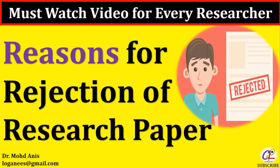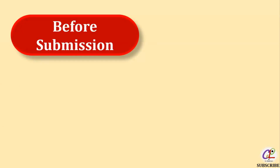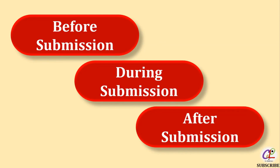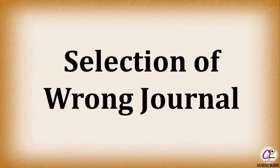I am going to discuss some of the important factors that you need to keep in mind during the process of publication of your research article. In my opinion, a researcher can make mistakes at three stages: before submission, during submission, and after submission. Let's discuss the basic reasons which can lead to rejection.